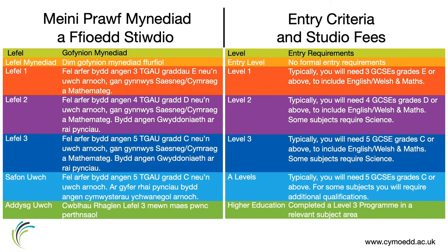Here you will see an overview of typical entry requirements for different course levels across the college in terms of entry criteria for media. For our Level 1, you will need three GCSEs at grades A* to E including English or Welsh and maths or numeracy, or an entry level university diploma at merit grade or above in a creative-related subject.